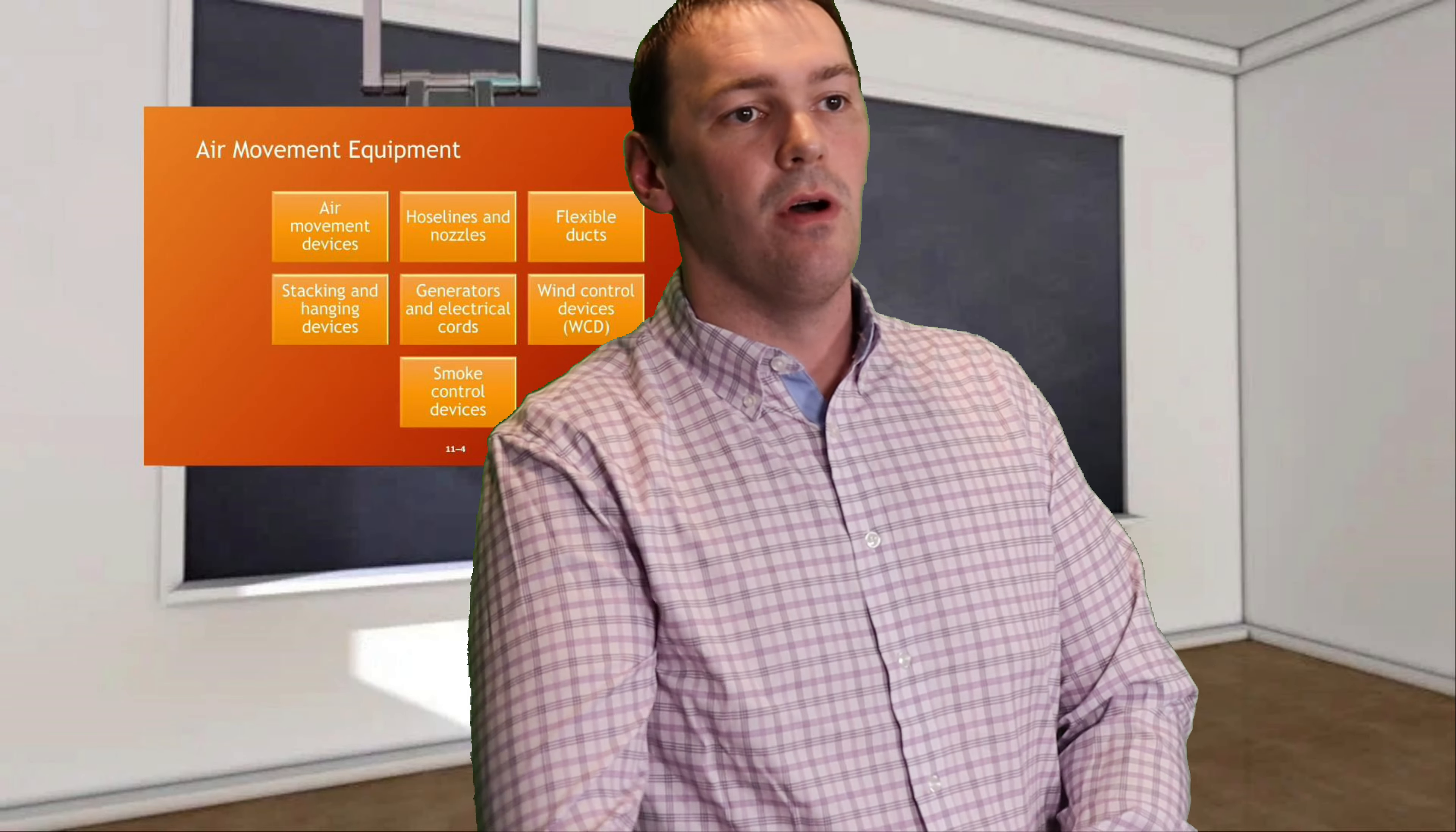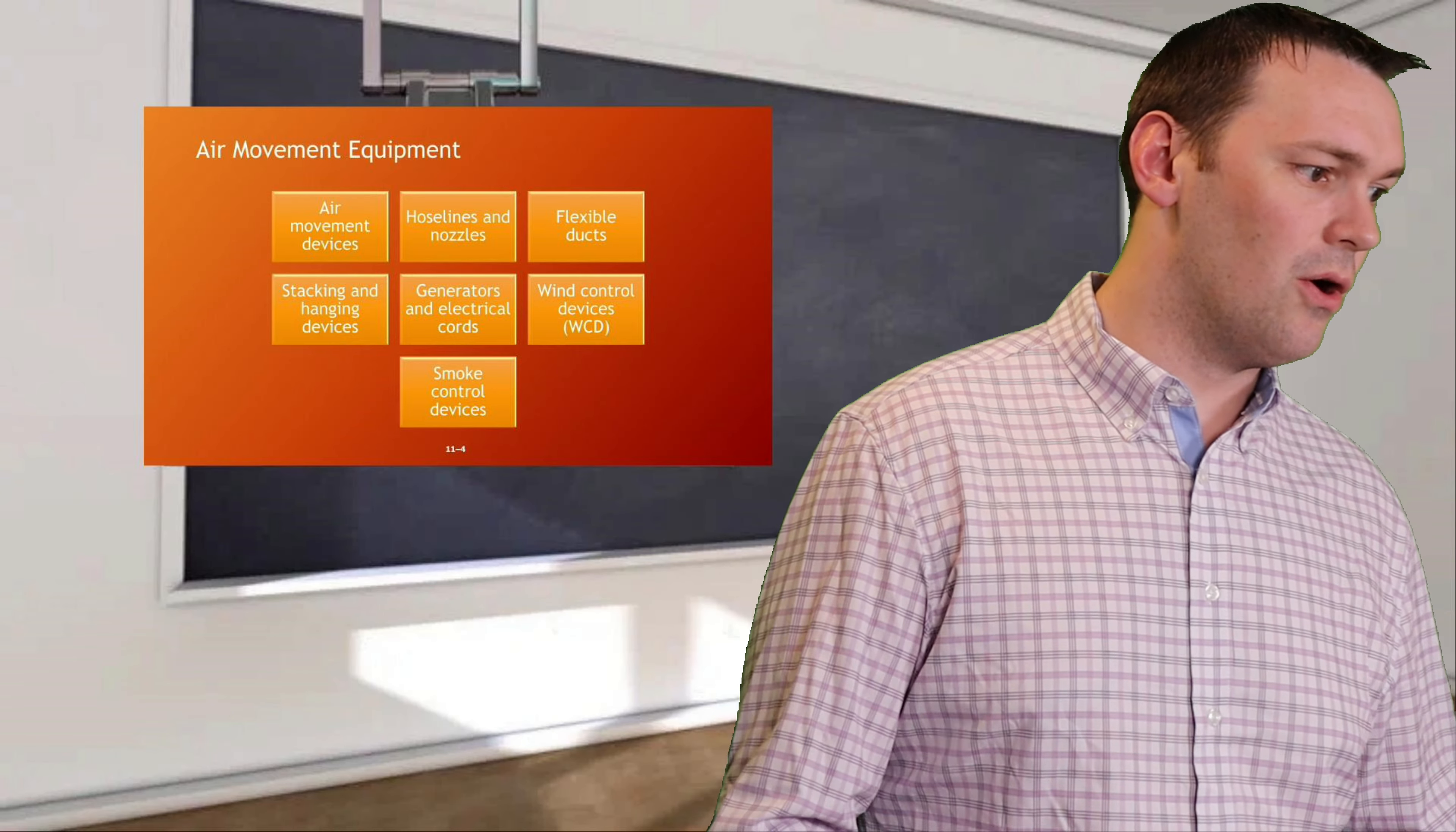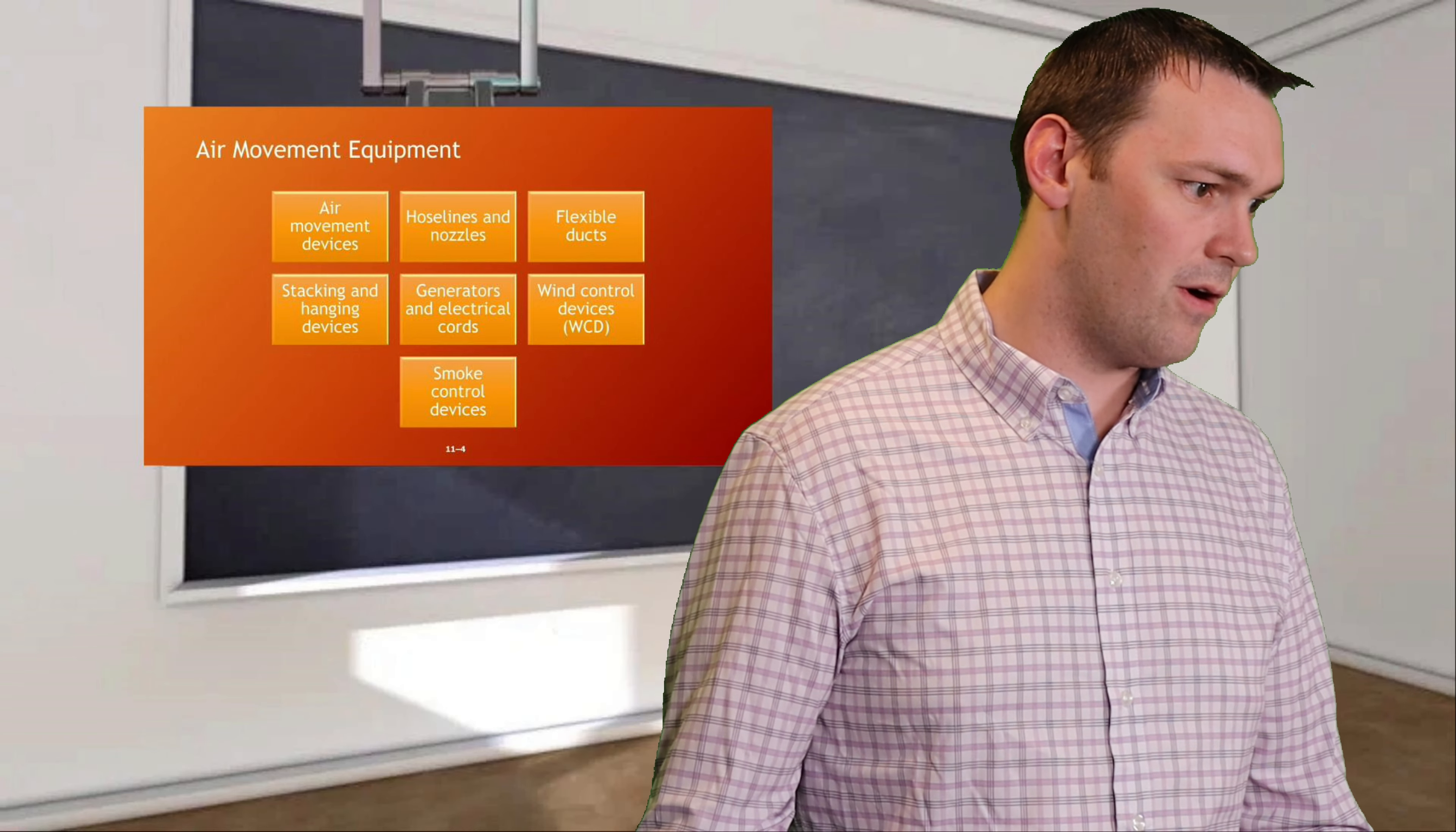Air movement equipment—what can we use to move the smoke out of the building? Air movement devices such as hose lines and nozzles, flexible ducts, stacking and hanging devices such as negative pressure fans or positive pressure fans, wind control devices, smoke control devices that generate airflow. Hose lines and nozzles used for hydraulic ventilation—you can use that fog nozzle and cover that whole window. Flexible ducts used to control flow of fire gases and smoke during ventilation.